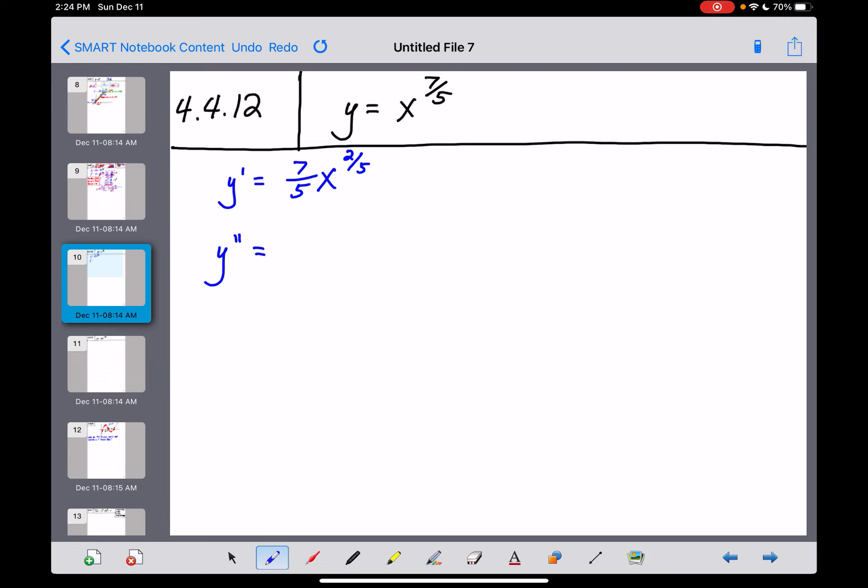y double prime - power rule again. 7/5 times 2/5 is going to get us, well that's not fun, 14/25. And then x to, drop the power by 1, negative 3/5. So if you were so inclined, you could rewrite that as 14 over 25x to the 3/5 power. If you wanted to, you could rewrite that with a radical - that would be the fifth root of x cubed. That might be another way to write it too, but I don't think that's going to be a whole lot of fun for us.